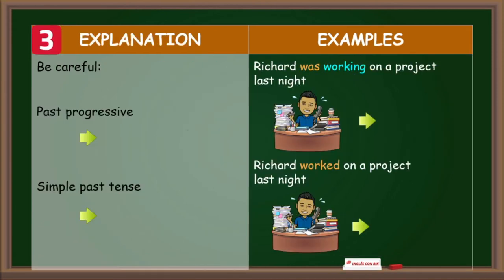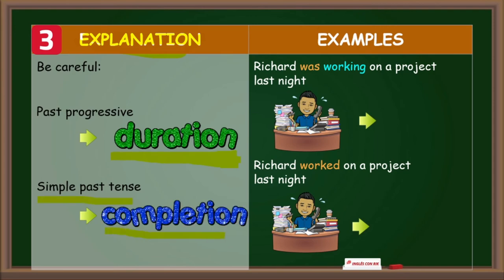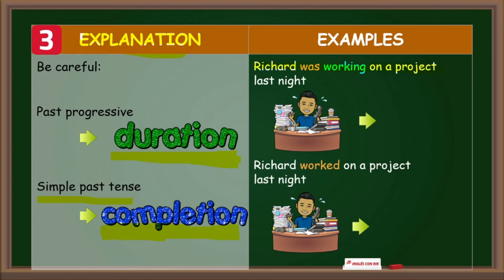Explanation number three: Use the past progressive to focus on the duration of an action, not its completion. And use the simple past tense to focus on the completion of an action. For example, Richard was working on a project last night.